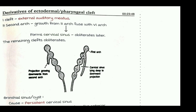Now for the derivatives of the pharyngeal clefts — the ectodermal side. From the first cleft, the external auditory meatus is formed. The second arch grows downward and fuses with the sixth arch, forming a projection called the cervical sinus. The cervical sinus later obliterates.